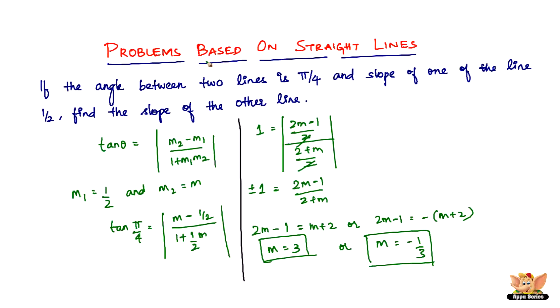This is a very simple and straightforward problem. There is the angle given and the slope of one of the lines, and we have to find the slope of the other line. So definitely we need to use this formula which relates both the angle and both the slopes of the lines.